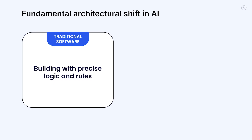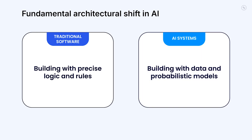The business logic in AI systems isn't coded line by line. It's the output of a process, where the context you feed into the model determines the reliability of the output. In other words, the quality of your business logic now depends directly on the quality of the data and how well it's contextualized.